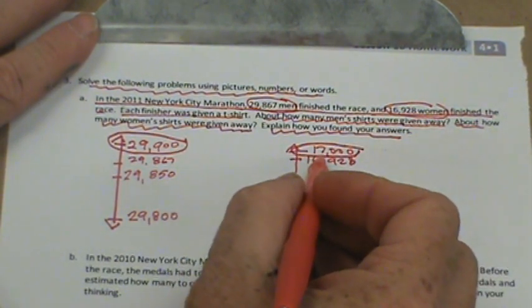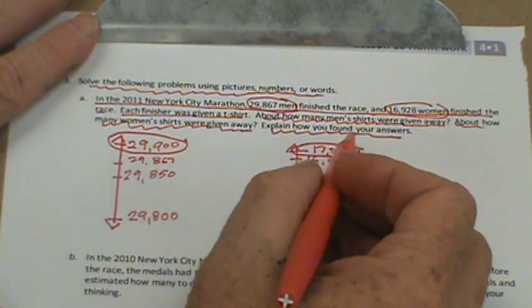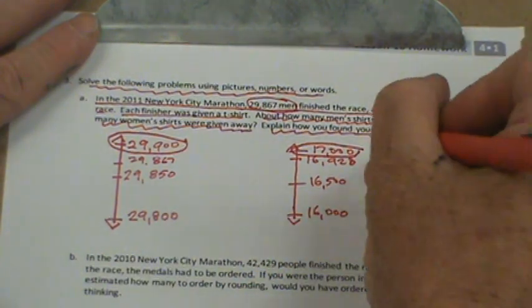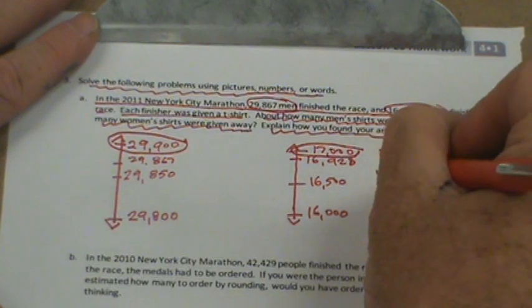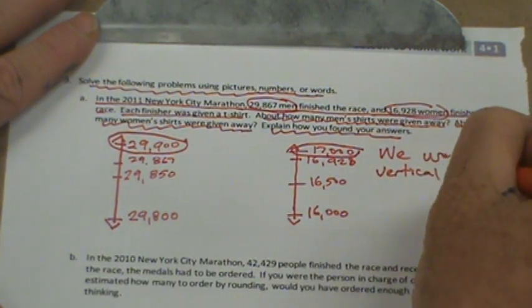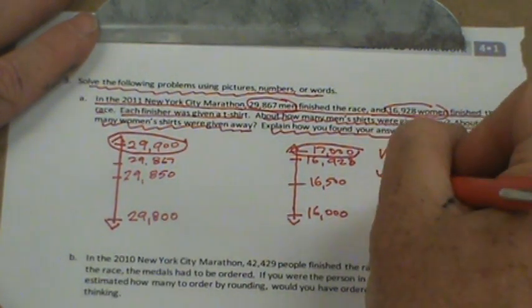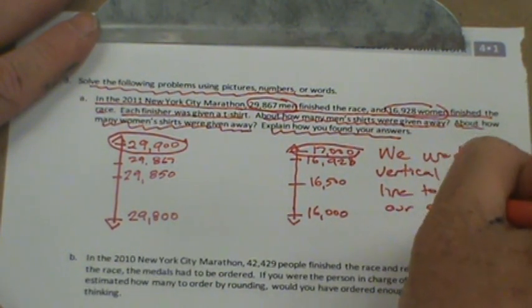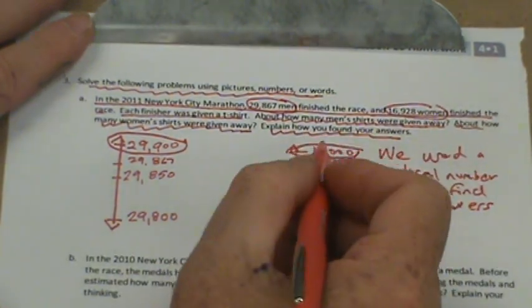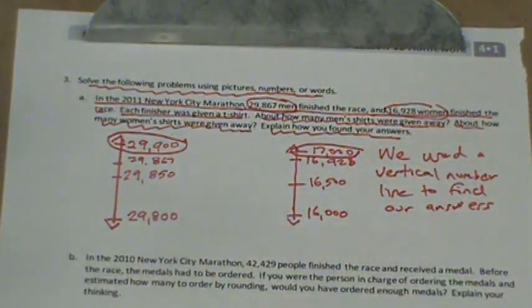So we have 17,000 here, 29,900 there. Now it says to explain how to find your answers. Well, we used a vertical number line to find our answers. And we also could have written that we used thousands here and hundreds there. Go ahead and pause this video and then take your homework and put it in the blue bin.